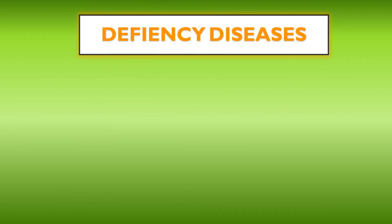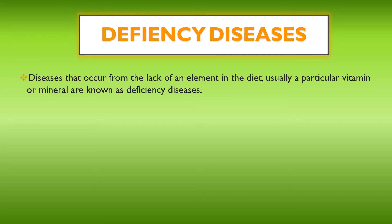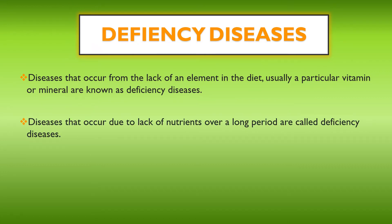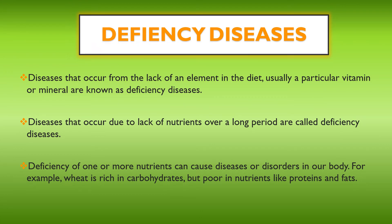Our next topic is deficiency diseases. Deficiency diseases are diseases which occur from the lack of an element in the diet, usually a particular vitamin or mineral. Diseases that occur due to lack of nutrients over a long period of time are called deficiency diseases. For example, if you do not eat food containing vitamins for just one day, you will not suffer from any deficiency disease. But if you are not taking food containing vitamins for a long period — maybe 2 to 3 months or more — then only can you suffer from a deficiency disease of that particular vitamin.